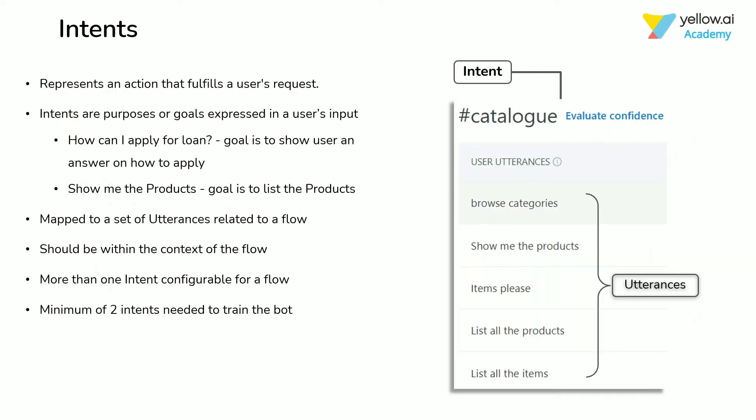In the platform, the user requirement is known as an intent. We can train the bot on an intent by mapping it to related utterances. These intents can later be configured to trigger a flow designed in the platform that has the same context as the flow.